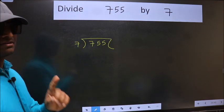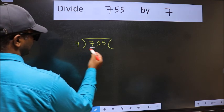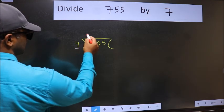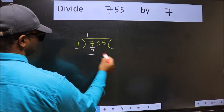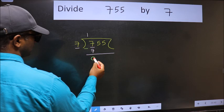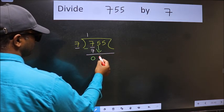This is step one. Here we have 7 and here 7. When do we get 7 in the 7 table? 7 once is 7. Now we subtract and get zero. After this, bring down the next number, which is 5.